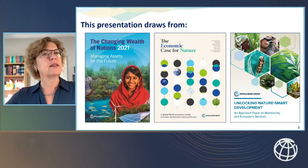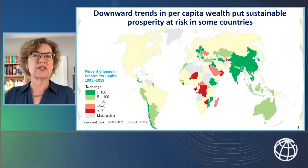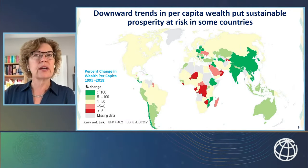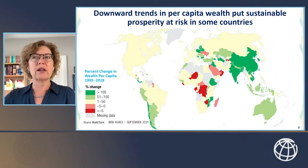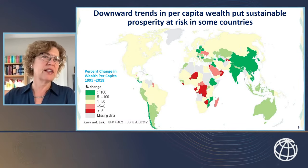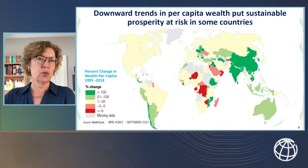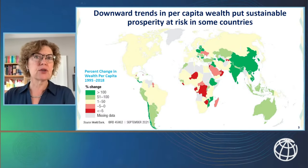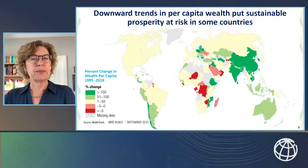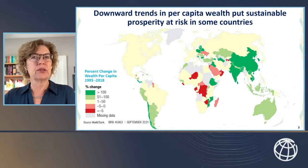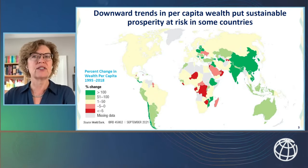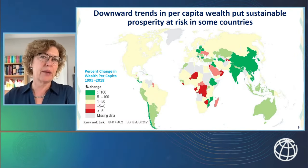Looking at our latest findings on global wealth, we see that although total wealth increased everywhere, per capita total wealth — which is a better measure of sustainability — did not. If resources, especially natural resources, are depleted for short-term gains, countries may be on an unsustainable development path. In fact, 26 countries across every income group experienced a decline or stagnation in per capita wealth.